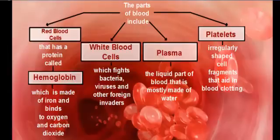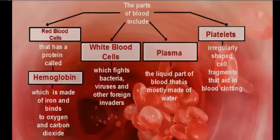Lastly, we have platelets. Platelets are irregularly shaped cell fragments that aid in blood clotting. When you cut yourself, the platelets get stuck to the ragged edges of your cut, rip open, and release chemicals that cause the clotting sequence to begin, so you can stop bleeding and form a scab to heal the wound.